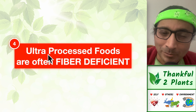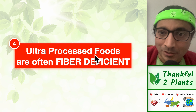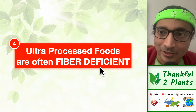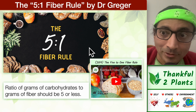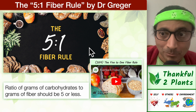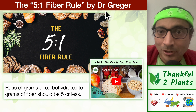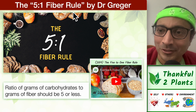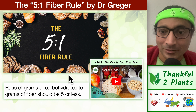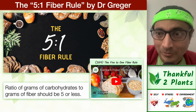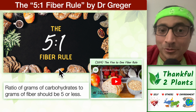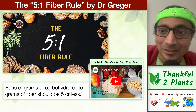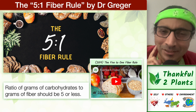Fourth point: ultra-processed foods — UPFs — are often, not always, often fiber deficient. It is a significant enough problem that doctors like Dr. Greger have devised rules like the five-to-one fiber rule. The concern is motivating doctors to devise rules so that if we choose to have ultra-processed foods, we can inspect the nutrition label, apply the rule, and decide whether a food is fiber-rich or not.